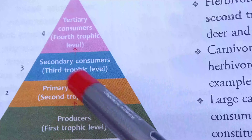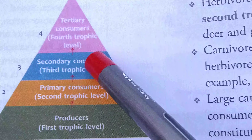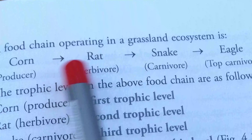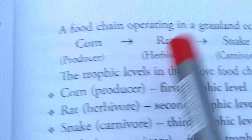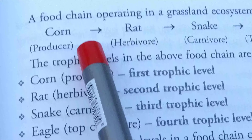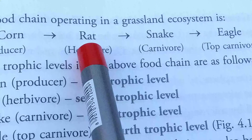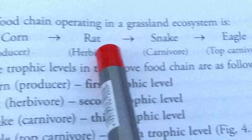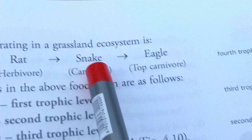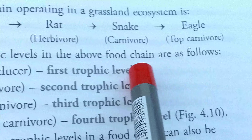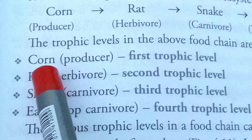Carnivores or secondary consumers that feed on herbivores constitute the third Trophic Level, for example snakes, frogs, small birds and small fish. Top carnivores or tertiary consumers that feed on the small carnivores constitute the fourth Trophic Level, for example eagle, tiger and lion. So there are four Trophic Levels in total, where food and energy transfer from one level to another.